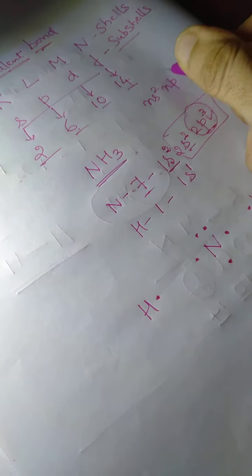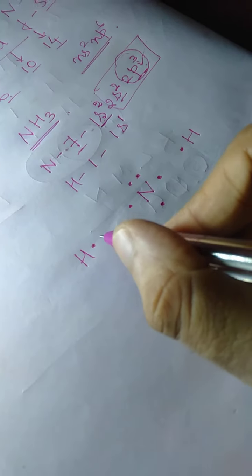Nitrogen has 5 electrons in the outermost shell: 1, 2, 3, 4, 5. Hydrogen has 1 electron, so it requires 3 more electrons to attain stability, because the P sub-shell can accommodate 3 more electrons — maximum 6. So here it requires 3 more electrons. To attain stability, nitrogen must achieve the octet configuration of NS2 NP6.